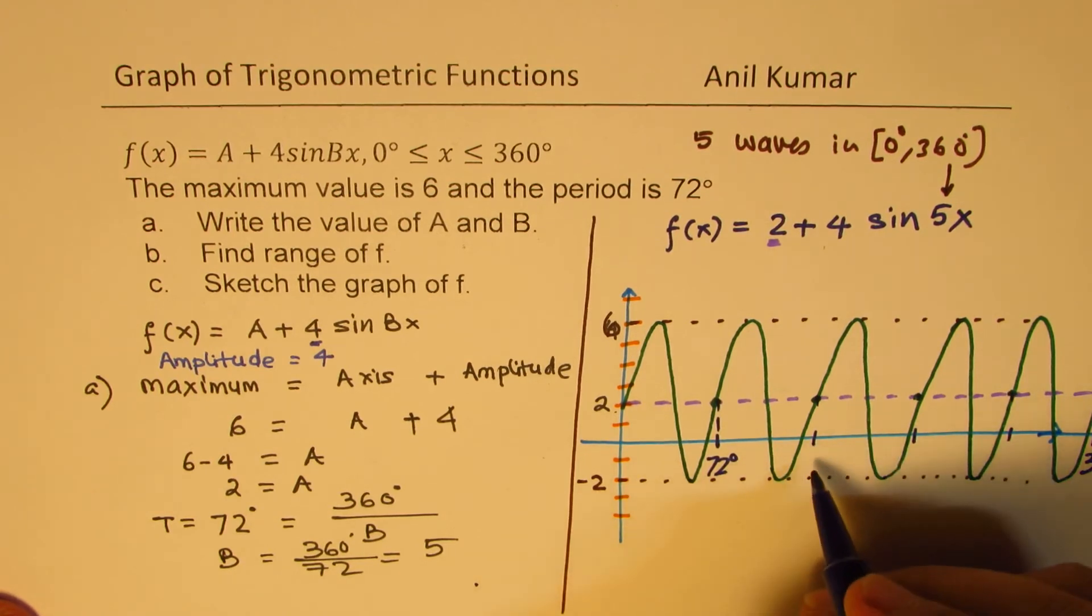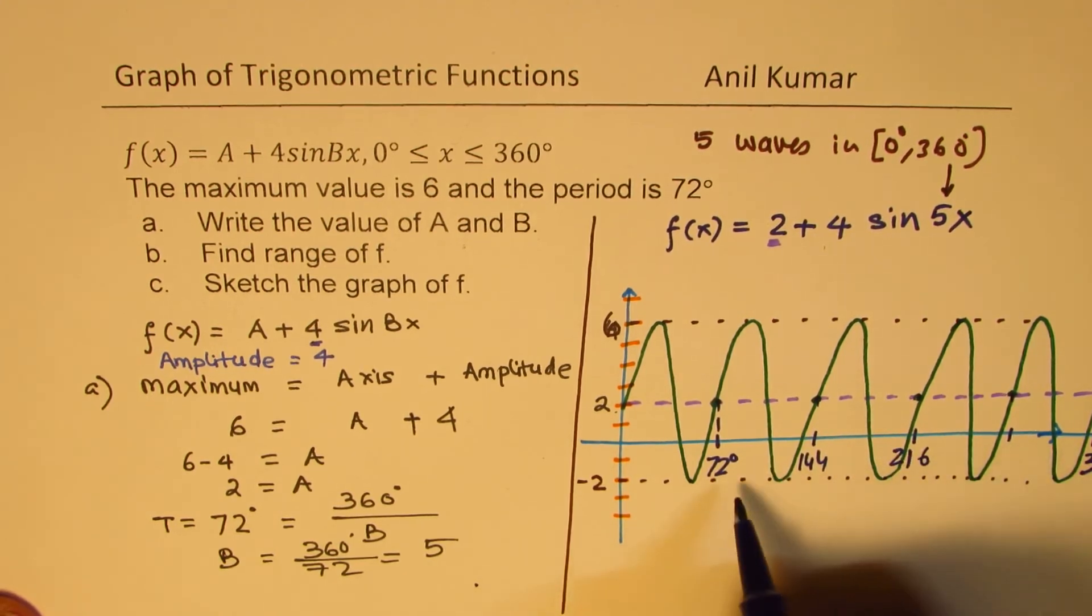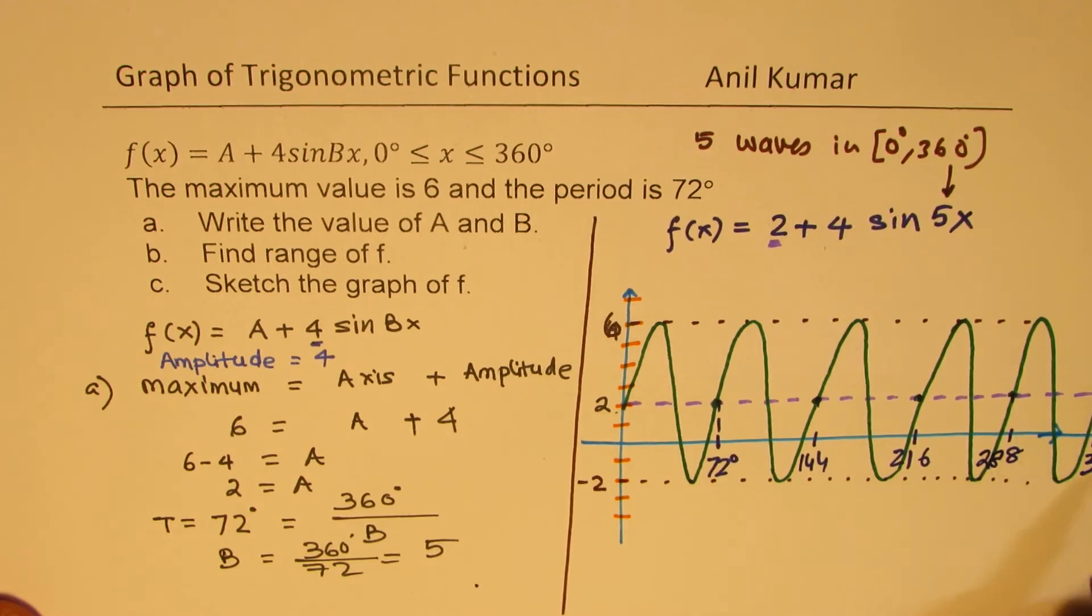So, this is 2 times 72, that is 144. This is 3 times 72, 3 times 2 is 6, 2, 1, 6. 4 times 74, which is 72, 8, and 4 times 7 is, again, 28, so 288 and 360.